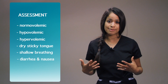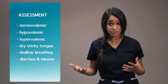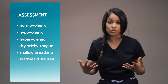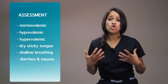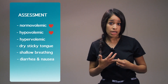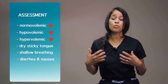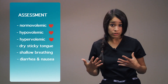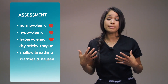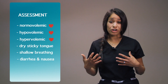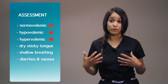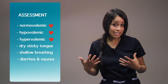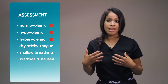Moving on to assessment findings for hyponatremia, beginning with the cardiovascular system. It consists of changes within your vessels referred to as normovolemic, hypovolemic, and hypervolemic. With normovolemic, you will have a fast heart rate. With hypovolemia, you will have low blood pressure and a fast heart rate. If you are hypervolemic, you could have elevated blood pressure.